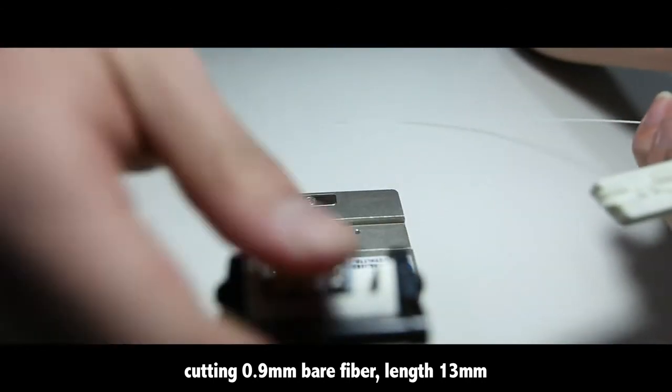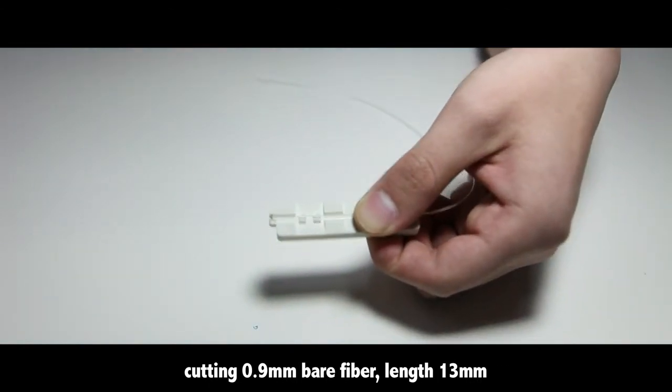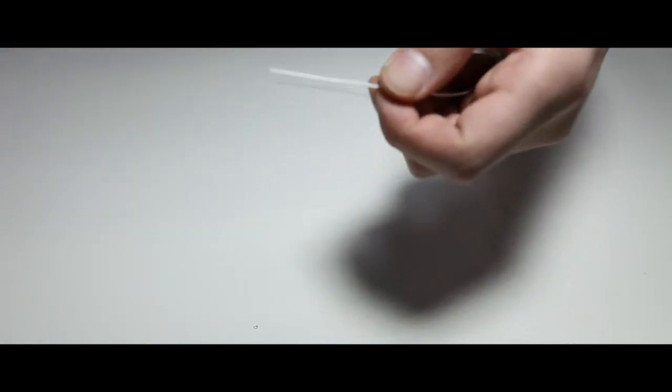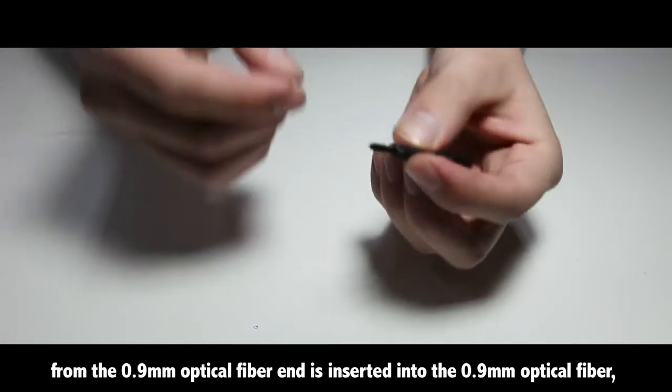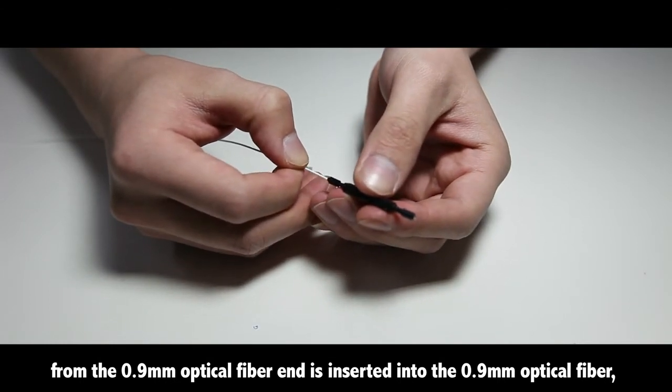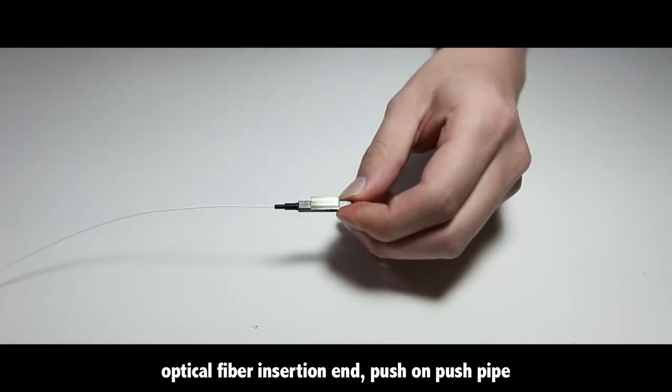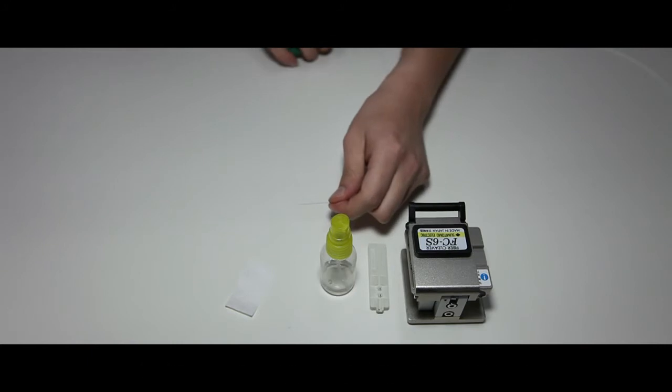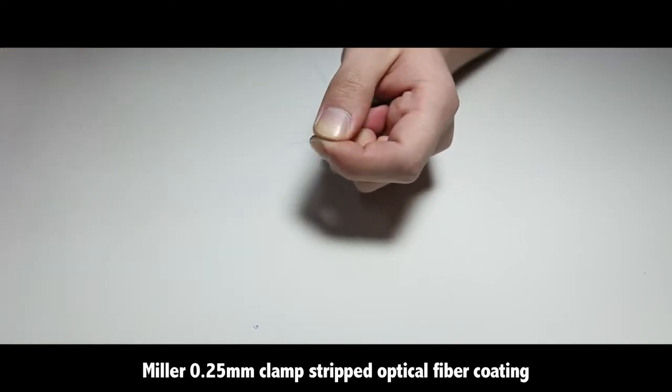Cut the 0.9mm bare fiber to a length of 13mm. From the 0.9mm optical fiber end, insert into the 0.9mm optical fiber insertion end. Push on the push pipe.